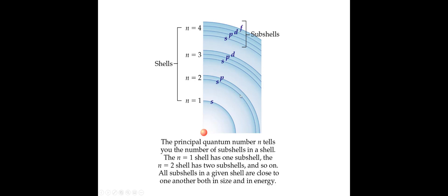Life would be easy if electrons went into 1s, then 2s, then 2p, and the order just went perfectly like that. But that's not how it works. Electrons want to go where they have the lowest energy first, and sometimes there's some jumping around to make that work out.